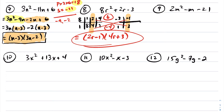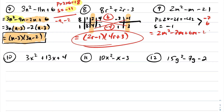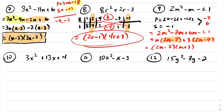For number 9, I can't factor the 2 out, so I'll use decomposition. My product is 2 times negative 21 = negative 42 and my sum is negative 1. Two numbers that multiply to negative 42 and add to negative 1 are negative 7 and 6. So I replace the middle term: 2m squared minus 7m plus 6m minus 21. GCF out m from the first two terms and 3 from the last two, both giving 2m minus 7. This factors into 2m minus 7 times m plus 3, fully factored.